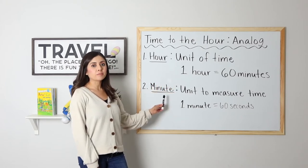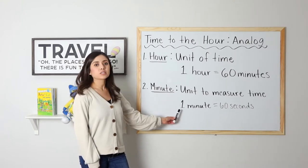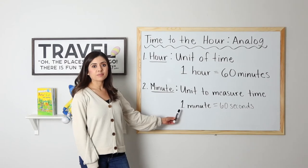Number two, we have minute. A minute is a unit to measure time. One minute equals 60 seconds.